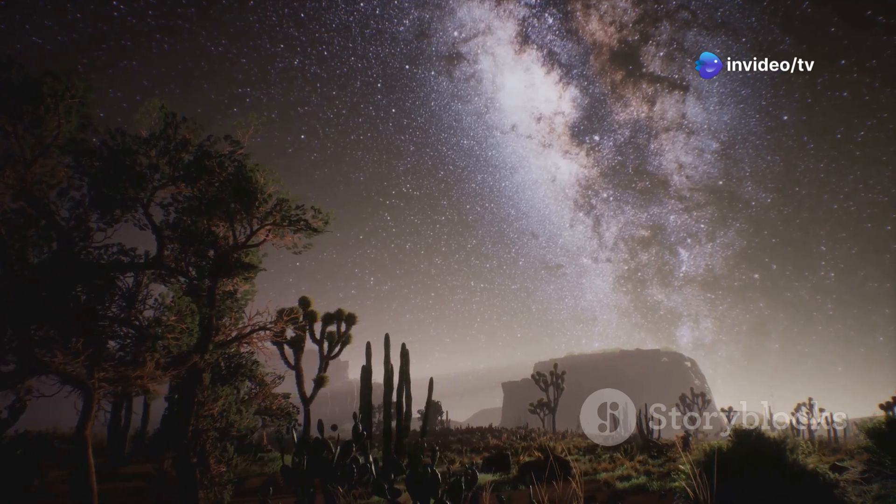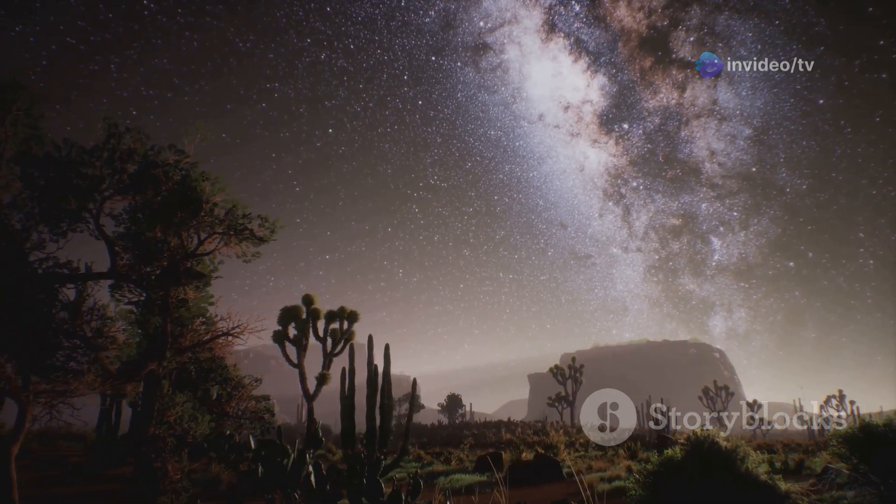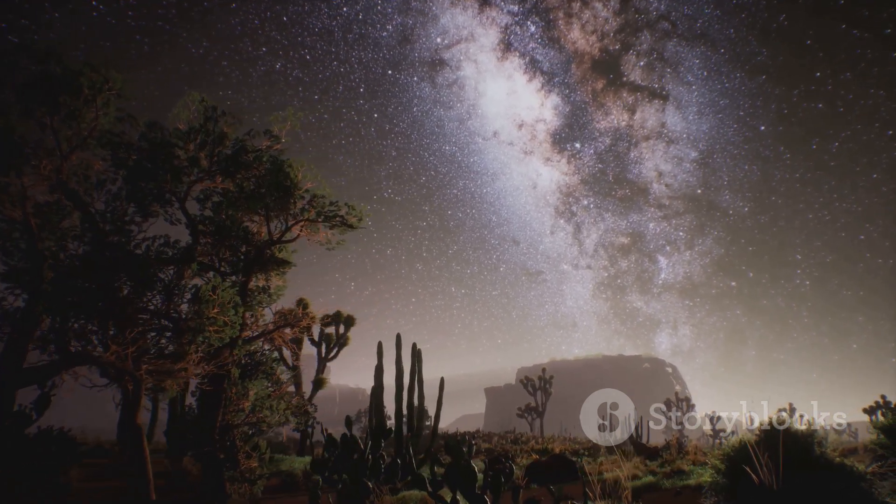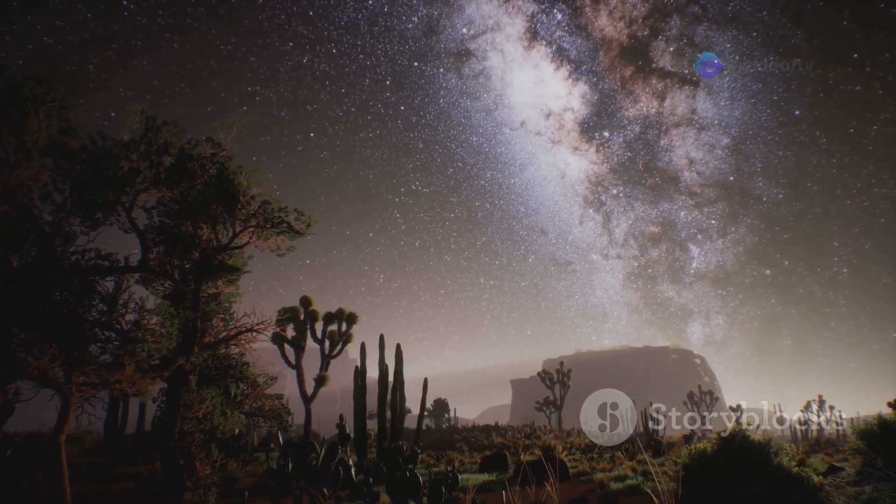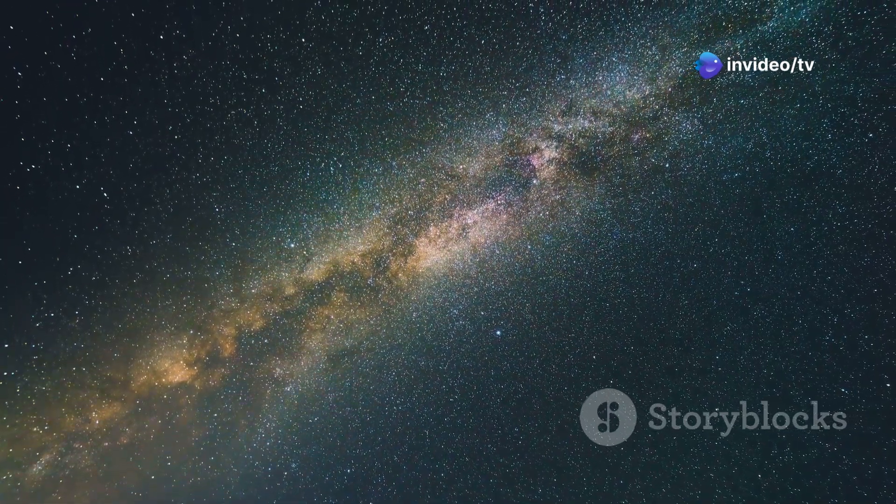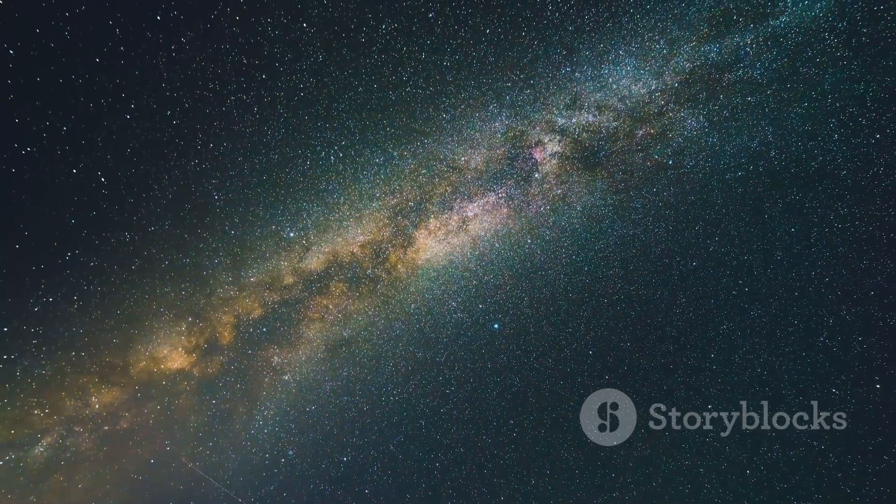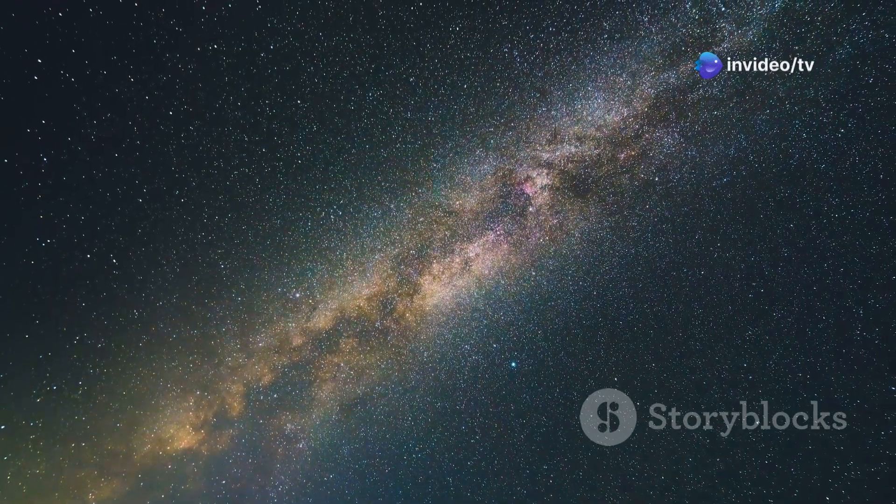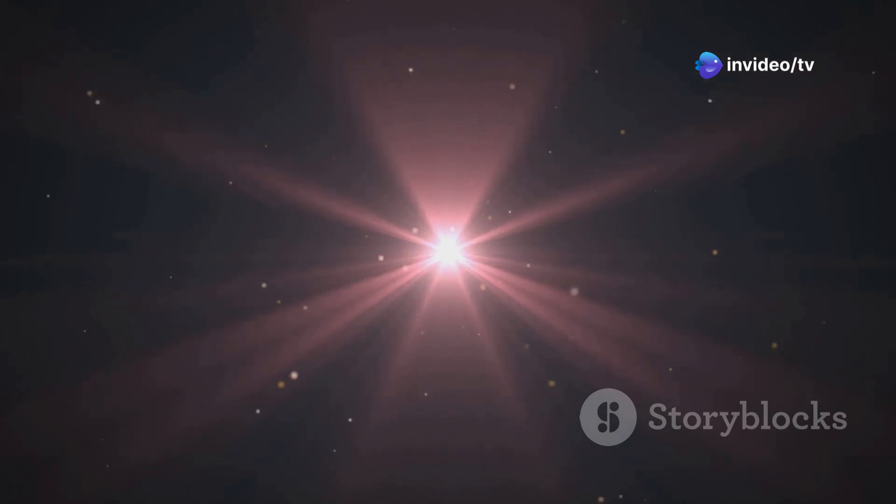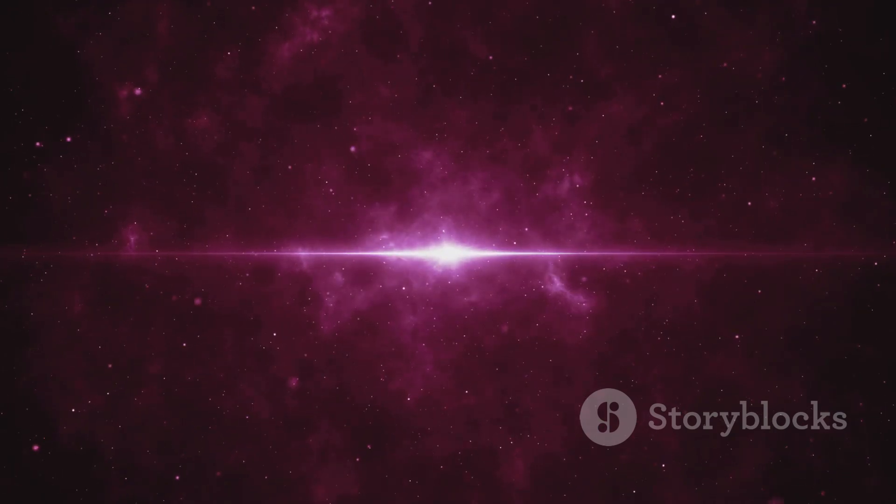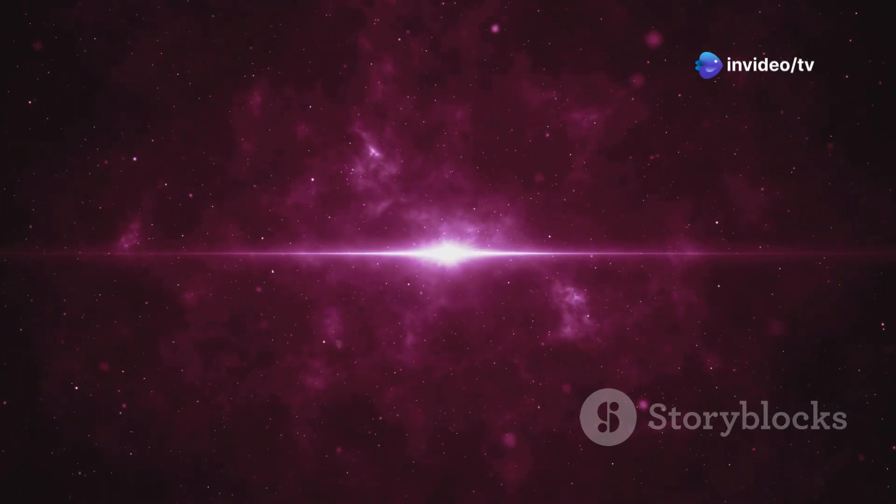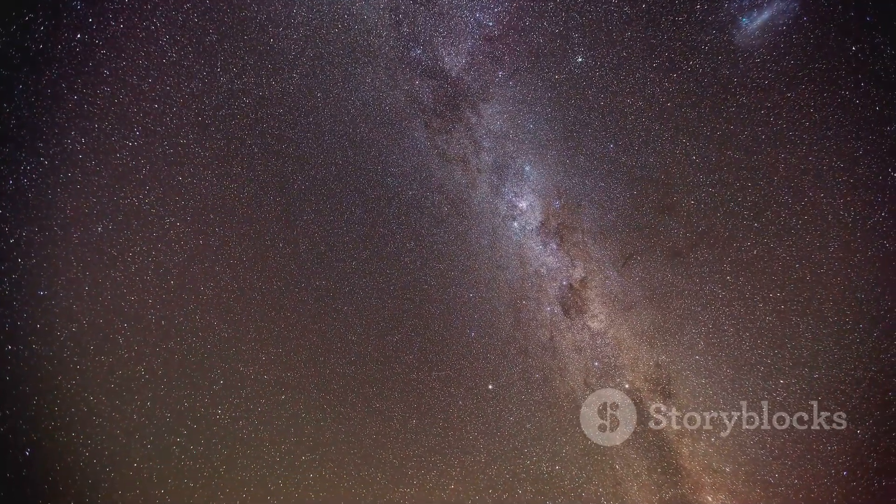It's hard to truly grasp the sheer size of the Milky Way. Our galaxy is about 100,000 light years across. To put that into perspective, a light year is the distance light travels in one year, which is about 5.88 trillion miles. So the Milky Way spans an almost incomprehensible distance. That means it would take a beam of light 100,000 years to travel from one side of the milky way to the other. If our solar system were the size of a quarter, the Milky Way would be as big as North America.